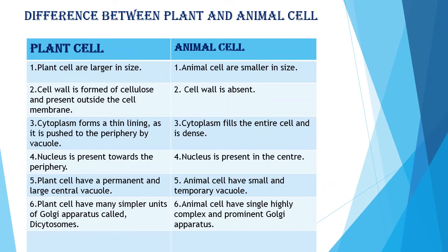Now let's see the differences between plant cell and animal cell. Plant cells are larger in size in comparison to animal cells, which are smaller. Cell wall is formed of cellulose and is present outside the cell membrane in plant cells, but in animal cells there is no cell wall. Cytoplasm forms a thin lining in plant cells as it is pushed to the periphery by the large vacuole.